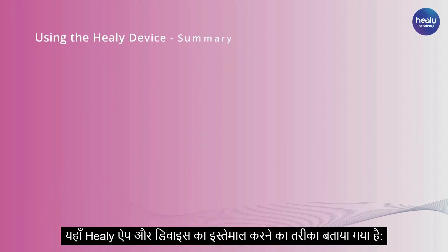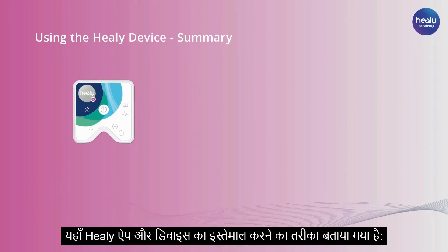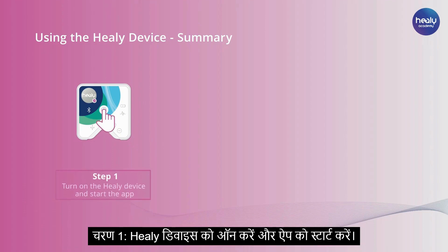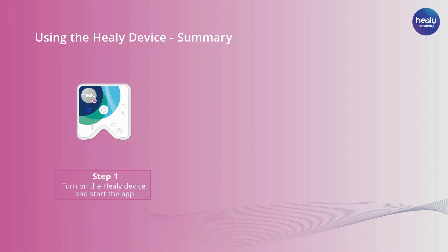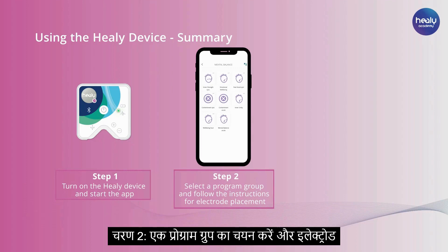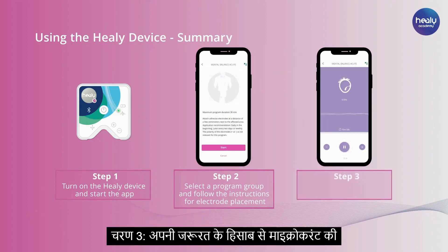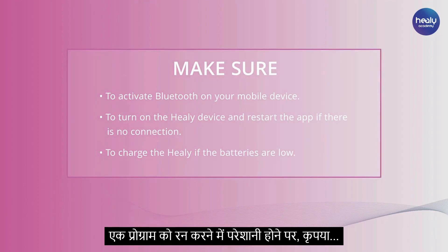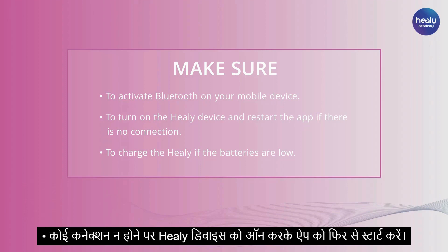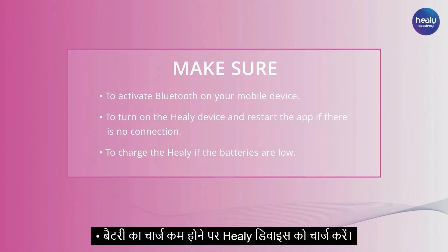Here is a brief summary of how to use the Healy app and device. Step 1: Turn on the Healy device and start the app. Step 2: Select a program group and follow the instructions for electrode placement. Step 3: Adjust the microcurrent intensity according to your needs. If you have trouble running a program, please make sure to activate Bluetooth on your mobile device, to turn on the Healy device and restart the app if there is no connection, and to charge the Healy device if the batteries are low.